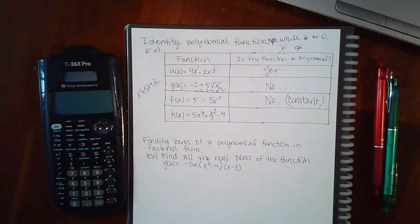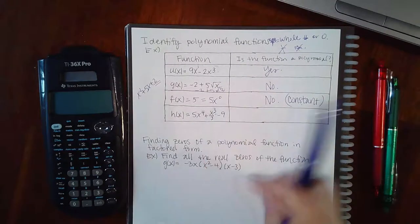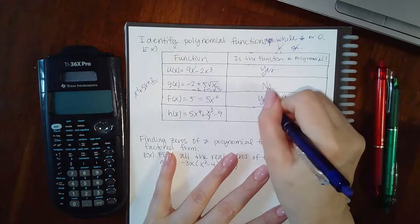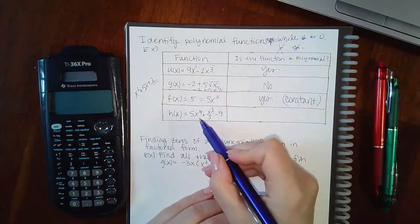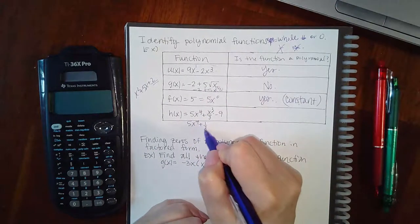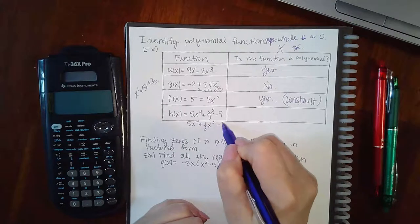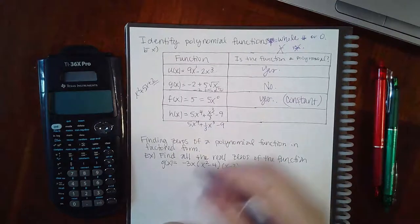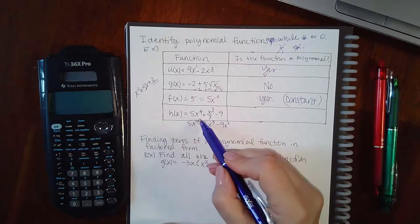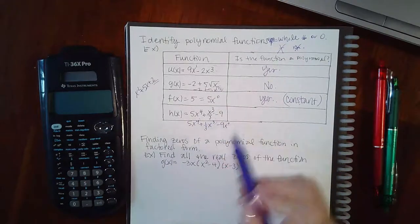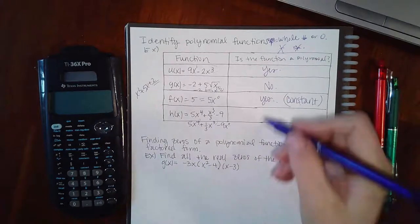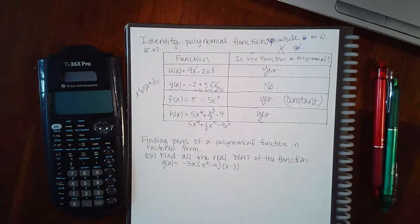Here you do have zero and therefore this should be a yes. Same thing here. This can be written as 5x to the fourth plus one third times x to the third minus 9. Again, you can add the x to the zero here. But the powers are what you're looking at, and those are whole numbers and you do have the zero. So this is a polynomial function.